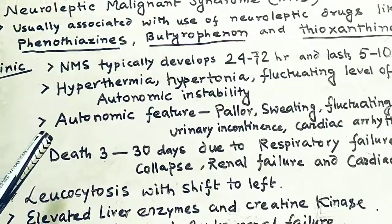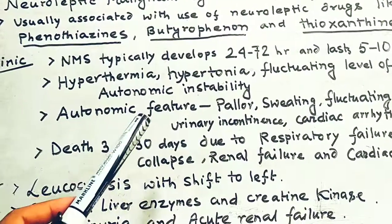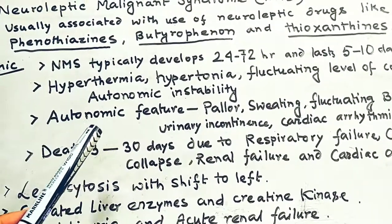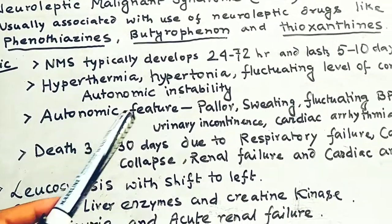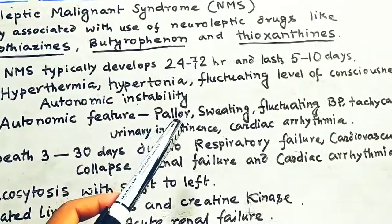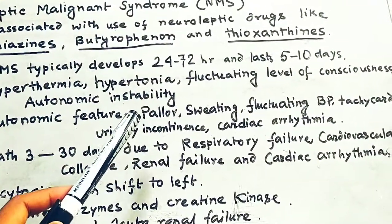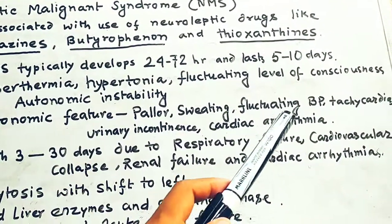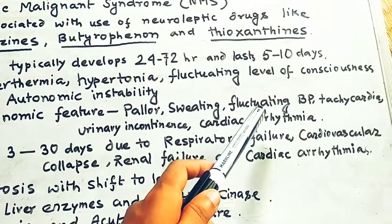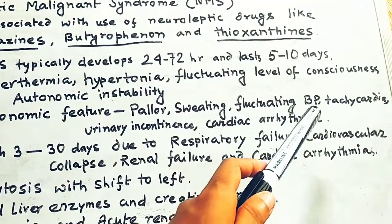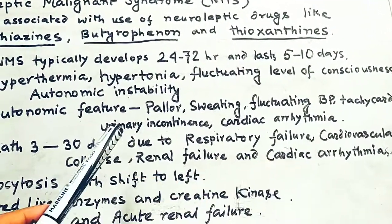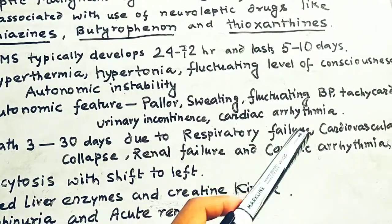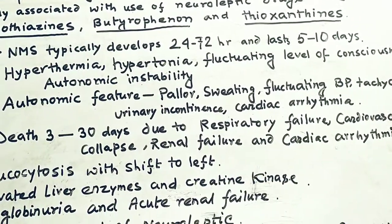Autonomic features are also common. Patients can develop pallor, sweating, fluctuating blood pressure, tachycardia, urinary incontinence, and cardiac arrhythmias. All these are clinical features of patients with NMS.